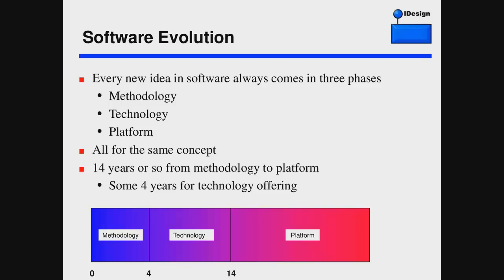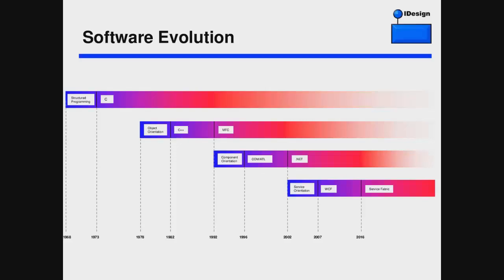One of the things we discuss in the Architects Masterclass is the cycle of software evolution. Every new idea in software always comes in three phases: first comes the methodology, then comes the technology, and then comes the platform. All three are always for the same thing — just different expressions of the same idea. These cycles last roughly 14 years. In the methodology phase, you typically try to do it on existing technology, but it's a new methodology so it's very ill-equipped. Then technology appears, and finally a platform appears.